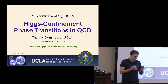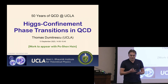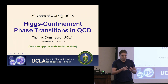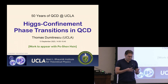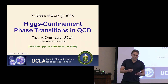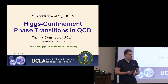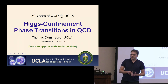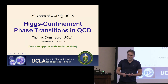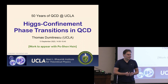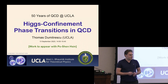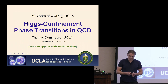Since we're celebrating the discovery of Asymptotic Freedom, I should start by saying that is really what enables us to explore QCD at extreme limits and extreme phases — very high temperatures, very high densities, deep in the Higgs phase. That's what enables calculations in those regimes and forms the basis for analyzing the phase diagram.